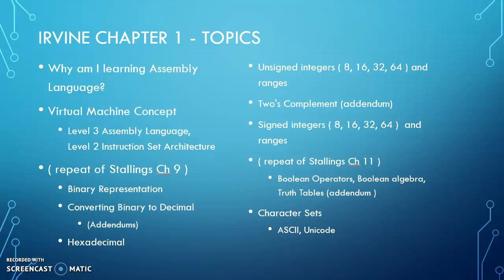Hi, this is Stephen Brower from American Valley Community College. This is for CSIT 256, Computer Architecture and Assembly Language. This is an overview of Irvine Chapter 1, and portions of Irvine Chapter 1 overlap with Stallings Chapter 9 and Stallings Chapter 11. I'll point those out as we go along.